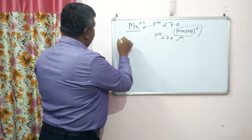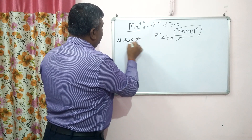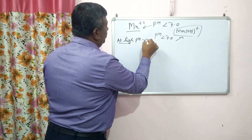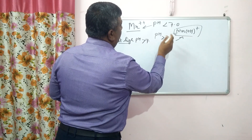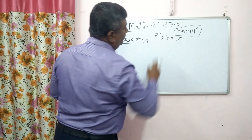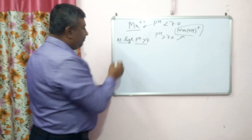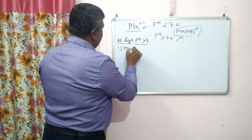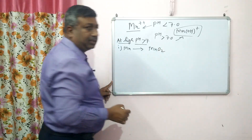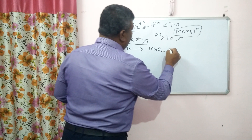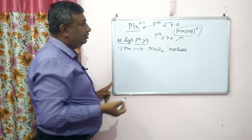At high pH, meaning pH more than 7, hydroxide forms are produced. Manganese is precipitated as MnO₂, manganese dioxide, which is insoluble. That is why manganese availability is reduced at high pH.